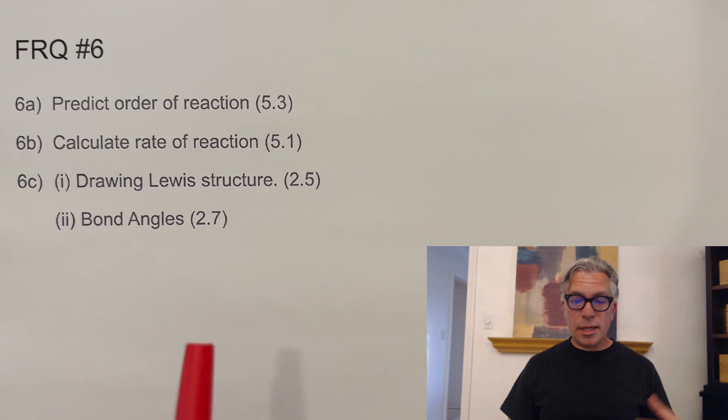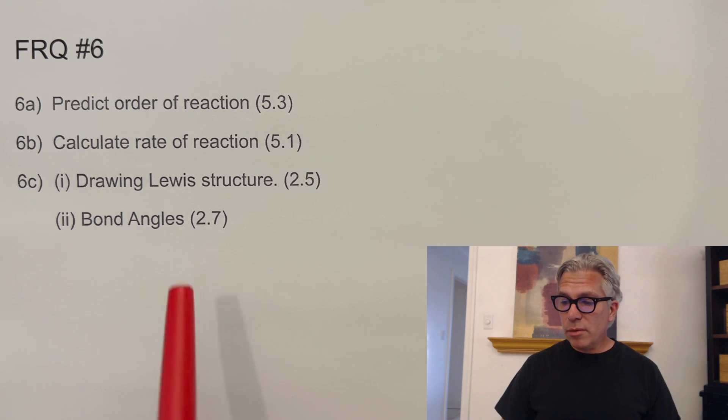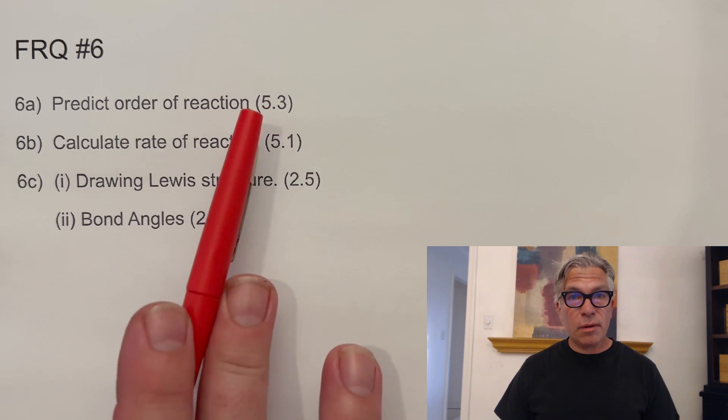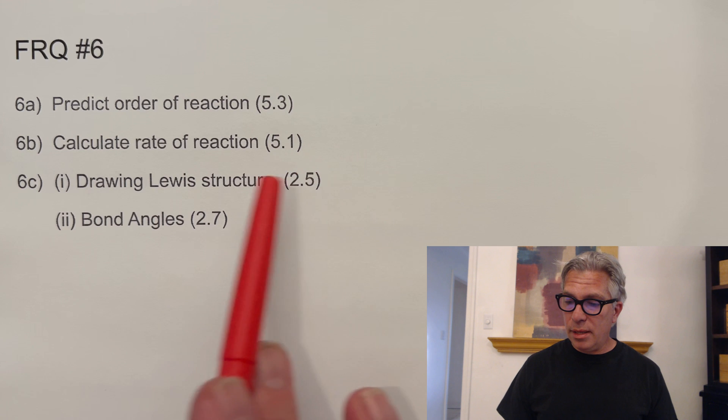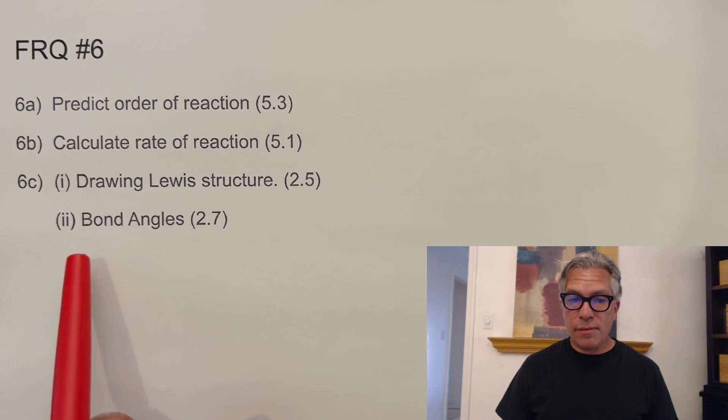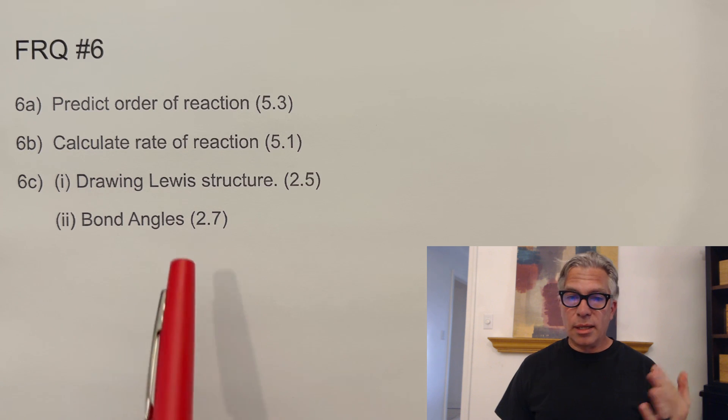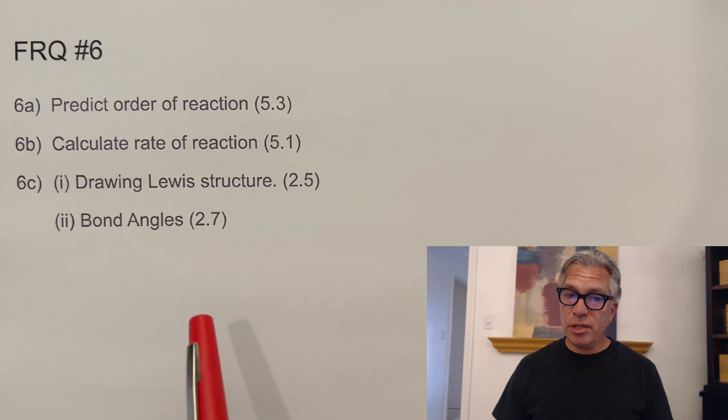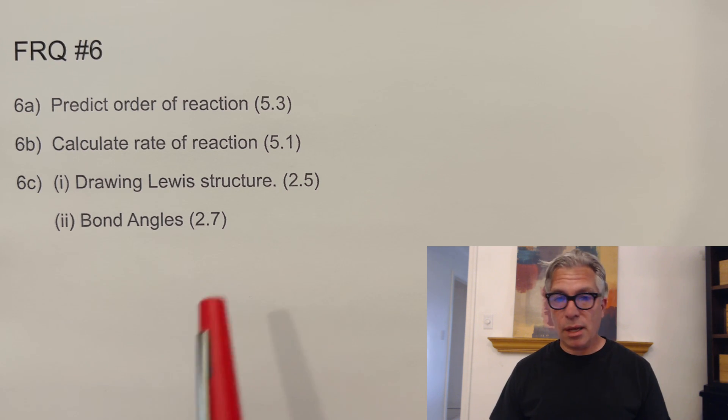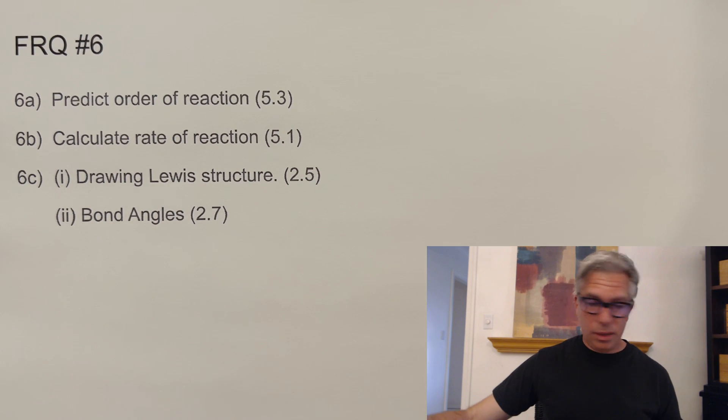FRQ number six. Calculating is more of a kinetics thing, but also a Lewis structure thing. So we start with kinetics predicting the order of reaction, calculating the rate of reaction. And then in the second half, they said, okay, well, here's two related structures. Let's finish one of them. And then let's talk about the bond angles. Would they be the same or different? A very typical question, appears on lots and lots of exams. But that is unit two. So I assigned those there.